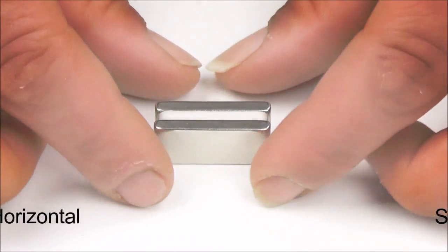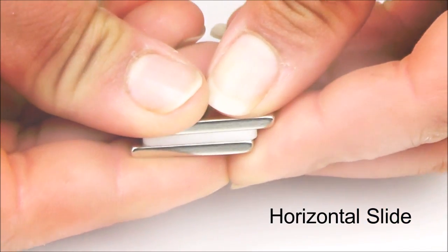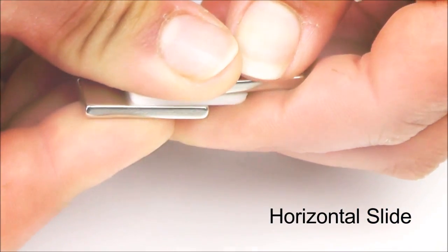For magnets under approximately three-quarters of an inch, the best technique is to horizontally slide the magnets apart by pulling each in a different direction.